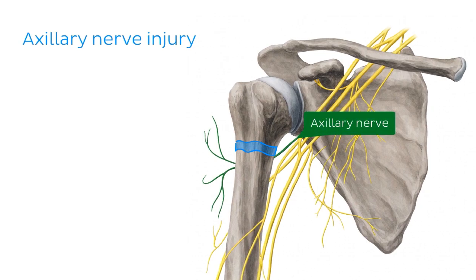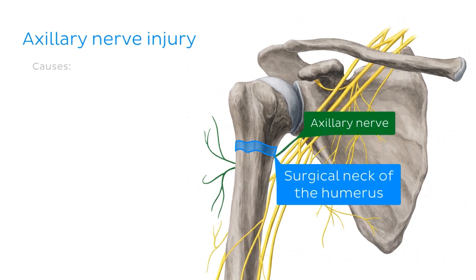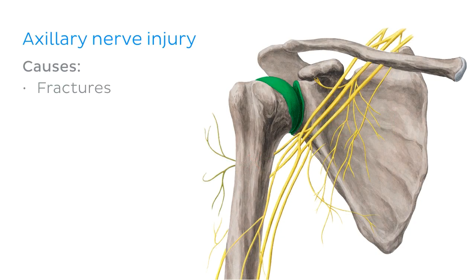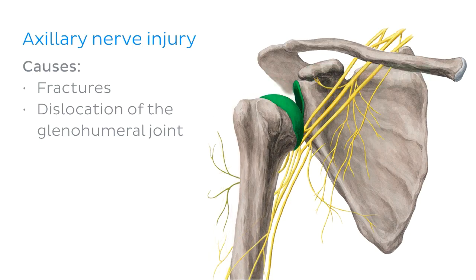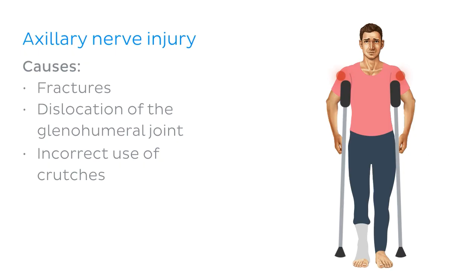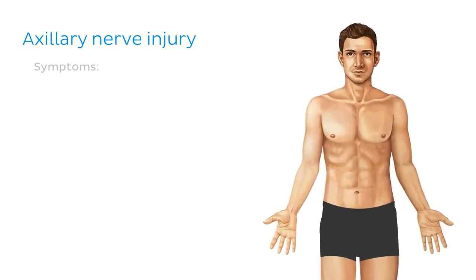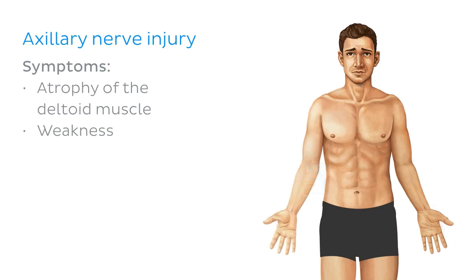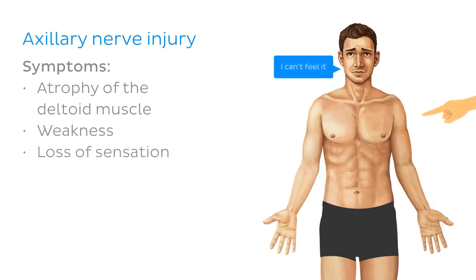In today's clinical notes, we're going to talk about axillary nerve injury. As you can see in our illustration, the axillary nerve runs posteriorly around the surgical neck of the humerus. Fractures in this region can damage the axillary nerve and consequently affect the functioning of the deltoid muscle. Other causes of injury to the axillary nerve include dislocation of the glenohumeral joint or compression during the incorrect use of crutches. Symptoms of axillary nerve injury include atrophy of the deltoid muscle, resulting in weakness and a loss of muscle tone, making the shoulder look flattened rather than rounded. In addition, there may be a loss of sensation to the skin lying over the deltoid muscle.